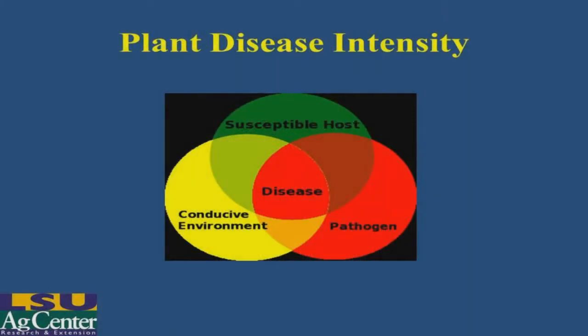Now, let's look at these overlapping circles, which is another way of looking at plant diseases and the components of disease. Again, we have the susceptible host, the conducive environment, and the pathogen. But by the way they overlap, in the middle you can see that we have the darker red, which is disease. The more the overlap in the center of all three components, we get more intensity — more development of that particular disease, also called severity.